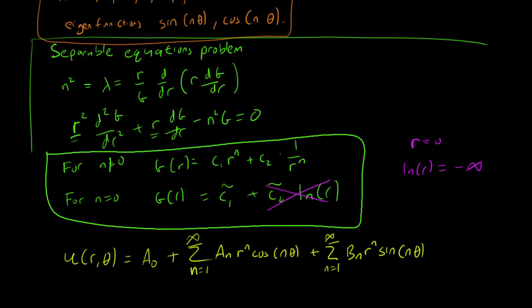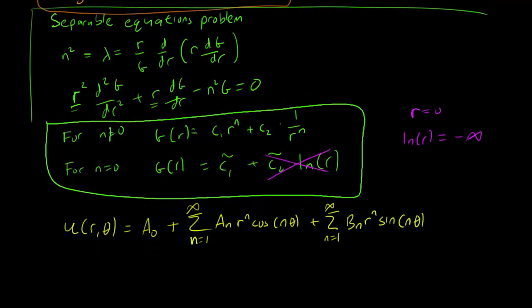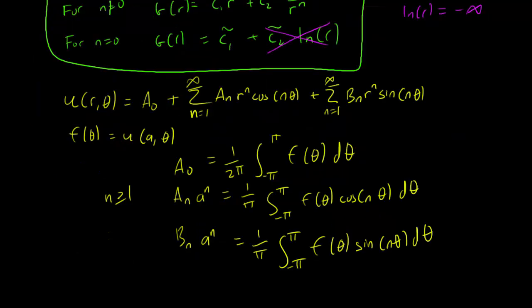And as usual, we have to use the boundary condition u(a,theta) equals f(theta) to figure out what the a0 and a1 to an, b1 to bn should be. And using standard Fourier theory tricks, we can calculate these solutions for a0, for an, and for bn. And the rest of the second two formulas of course apply when n is bigger or equal to 1.